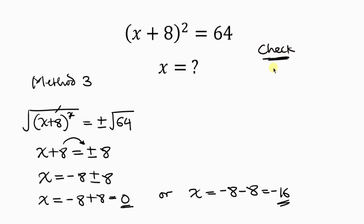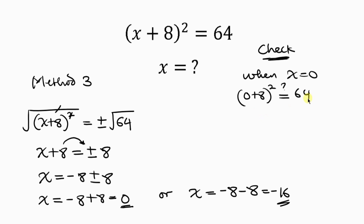Starting with x = 0: substituting gives (0 + 8)² = 8² = 64. This equals the right hand side of 64, so x = 0 is confirmed as a valid solution.